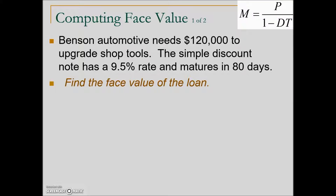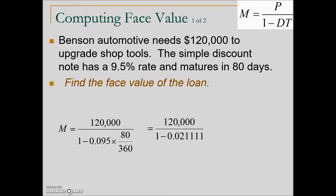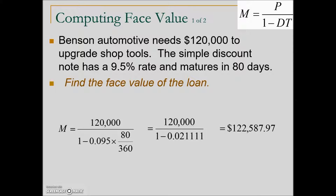Here is our formula for calculating the maturity value of a discount note. We will put $120,000 in place of the proceeds — the desired amount — in the numerator, and in the denominator: 1 minus D, which is the discount rate of 9.5% expressed as a decimal, times time expressed in years. Simplifying the denominator gives us the numerator $120,000 divided by the denominator value, giving us the maturity value or face value of this discount note. This is the amount Benson Automotive would need to request so that they have proceeds of $120,000.